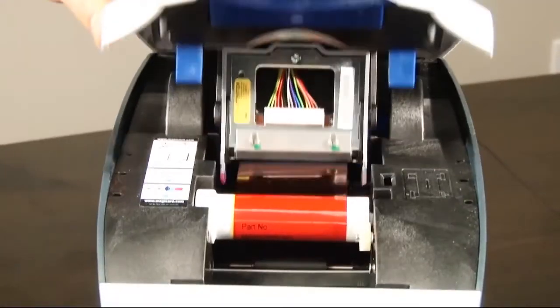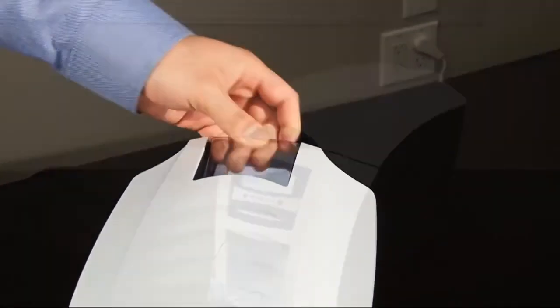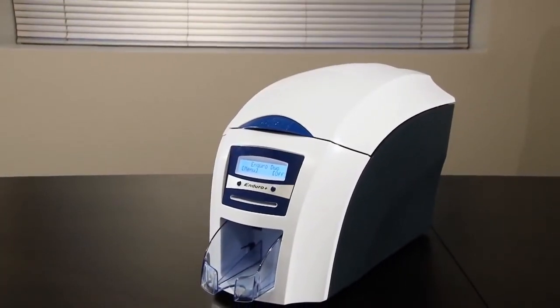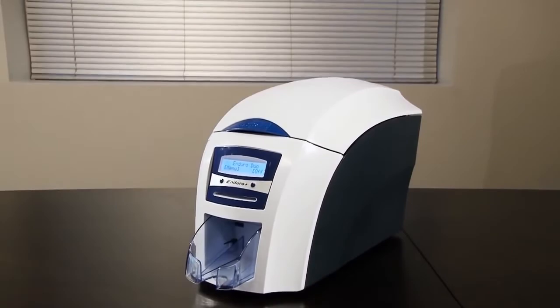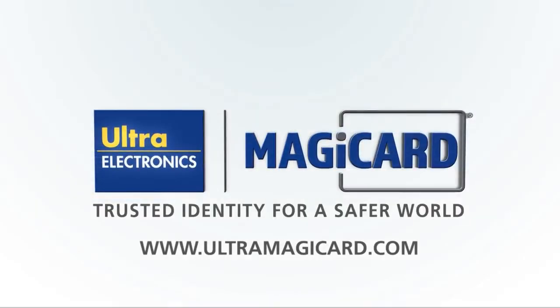Gently close the lid of the printer and replace the card hopper into the back of the unit. Your Enduro Plus is clean and ready to print. For technical support, questions or problems, please visit us at www.ultramagicard.com.